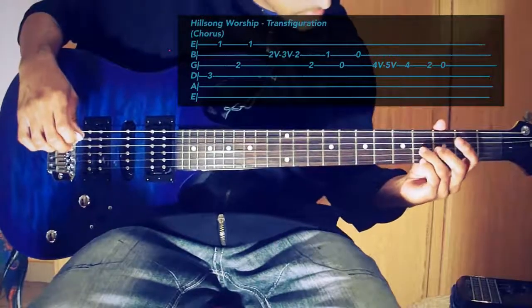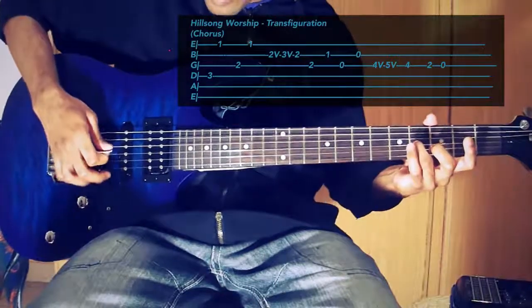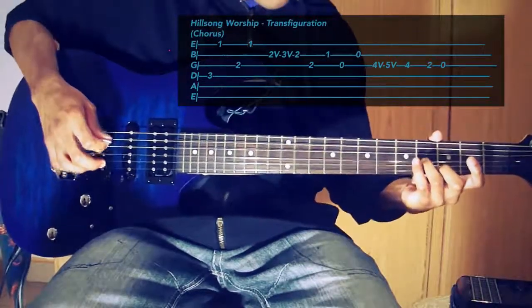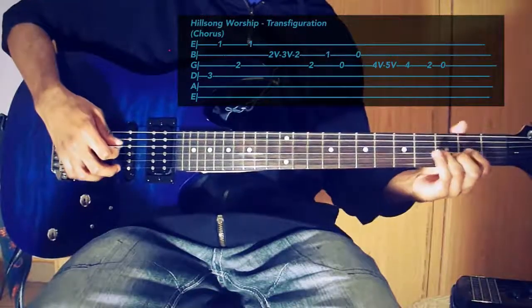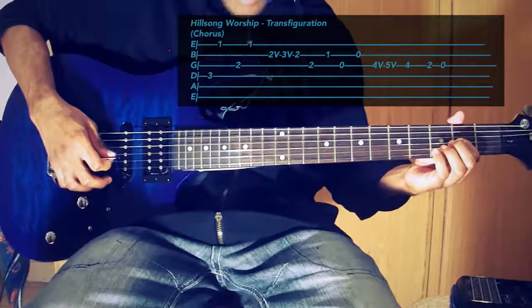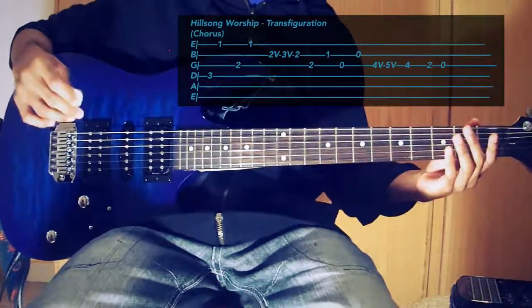Then you are going to go to the G string on the fourth fret and with your third finger you are going to bend. Then go to the second fret of the G string. Then you are going to start that again.